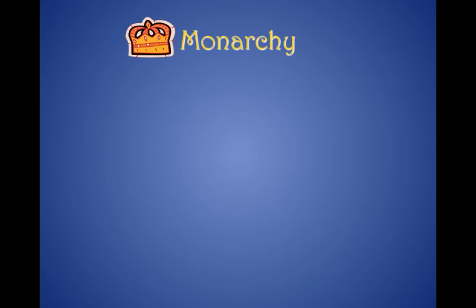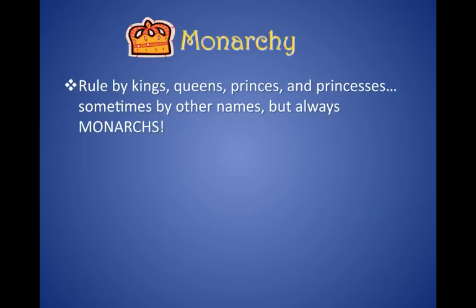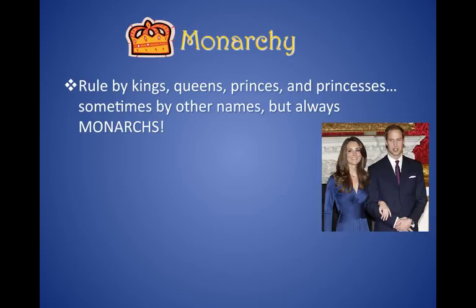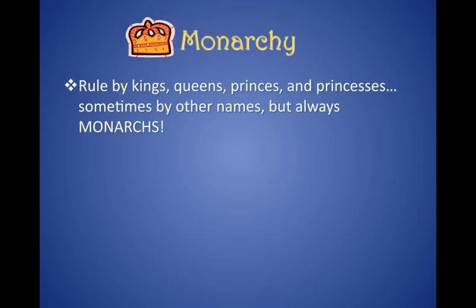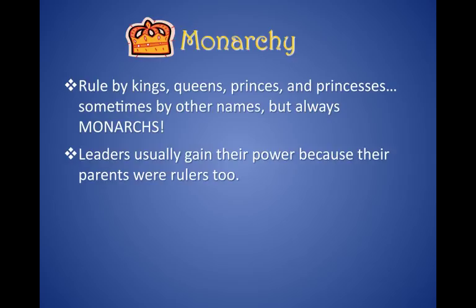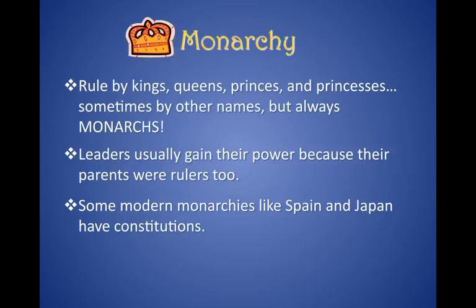A monarchy is where you have rule by kings and queens and princes and princesses — they're called monarchs. "Mono" meaning one, one in charge. Power is passed down through blood, and leaders usually gain power because their parents were rulers. There are even some modern monarchies controlled by constitutions, like Spain, Japan, and even England to some degree.